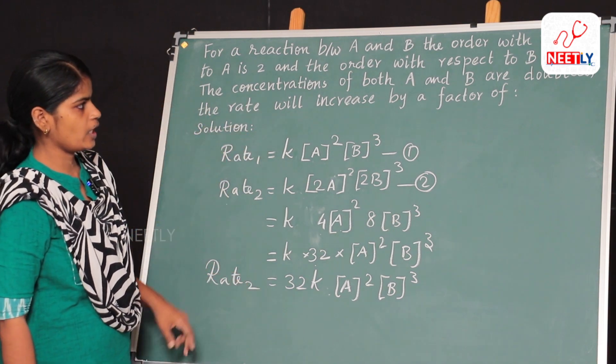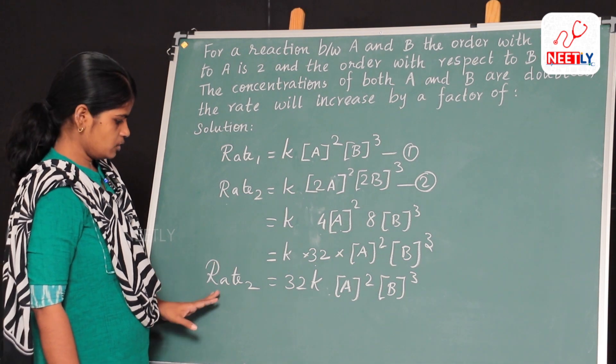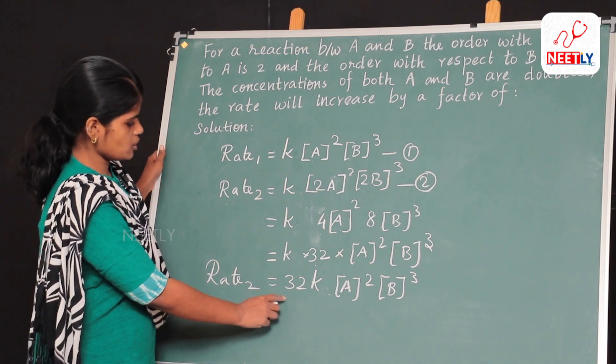That is, when the concentrations of both A and B are doubled, the rate will be increased by a factor of 32.